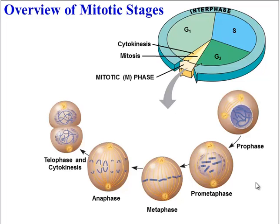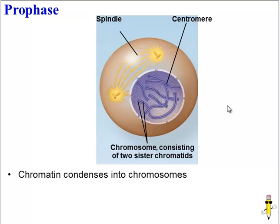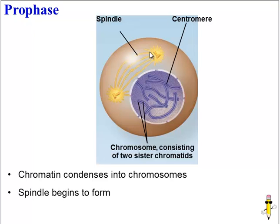Let's take each phase one at a time. Prophase is the first step of mitosis, and here a few interesting things happen. First of all, the chromatin is starting to condense into chromosomes — we can start to see the rod-shaped bodies. Also, the spindle begins to form, and in the case of animal cells, you'll also see the centrioles at either end of the spindle.